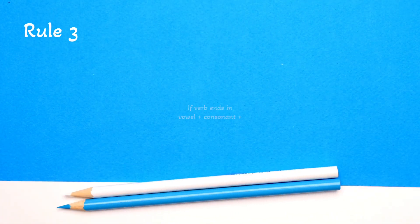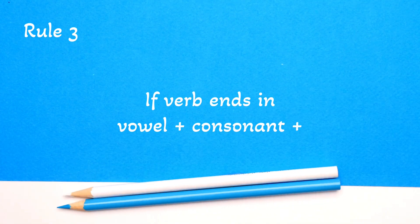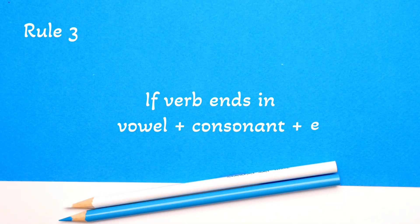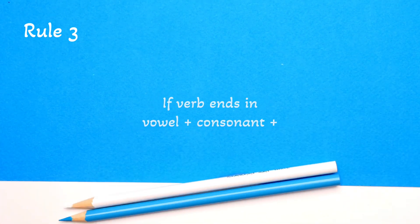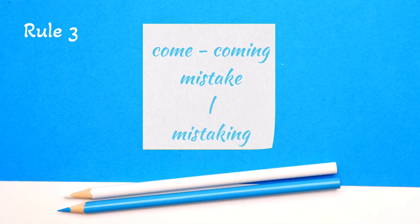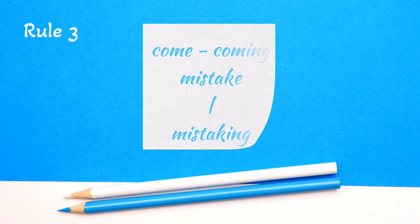Rule number three: if the base verb ends in a silent -e, we omit the -e. For example: come → coming, mistake → mistaking.